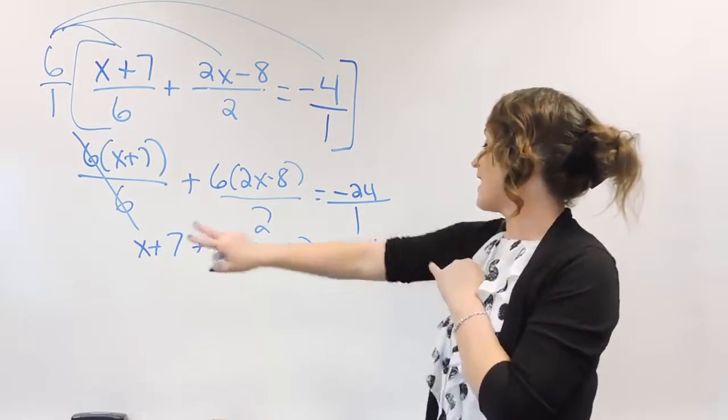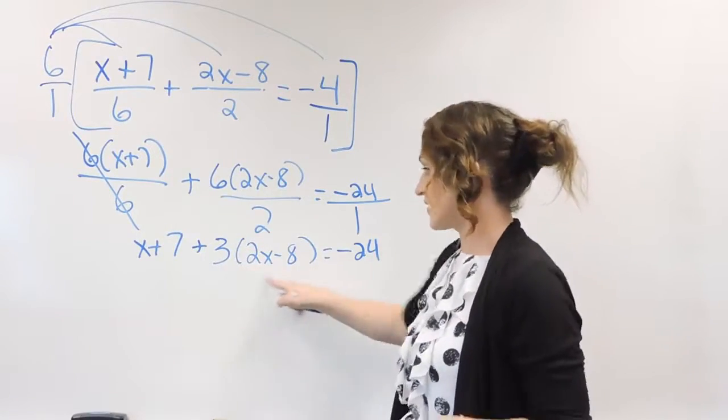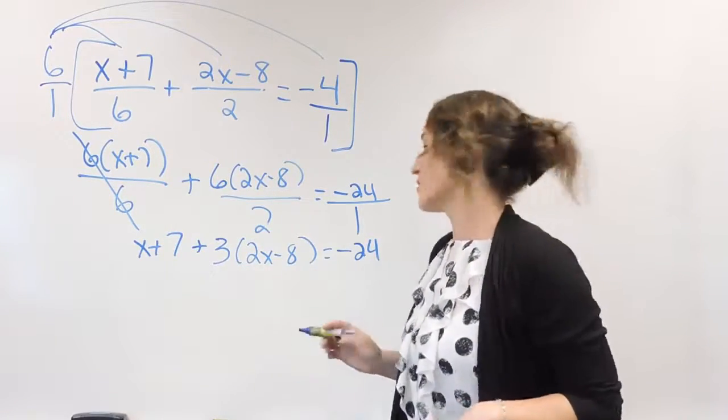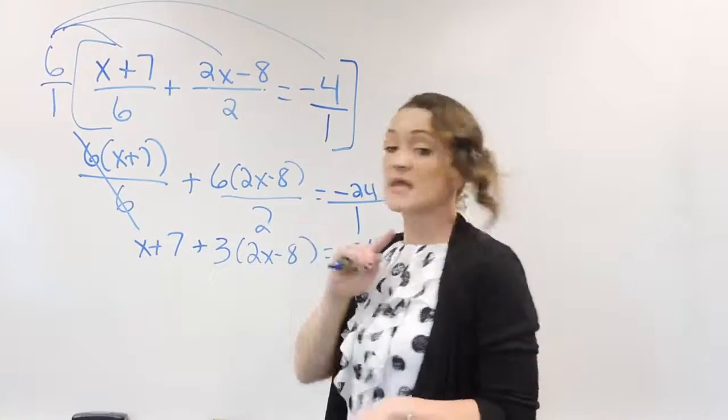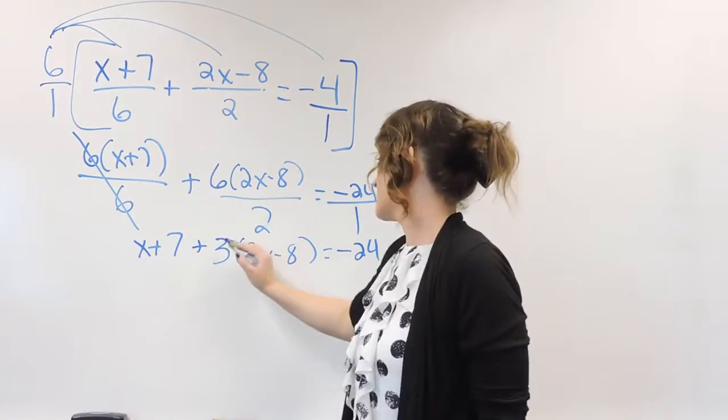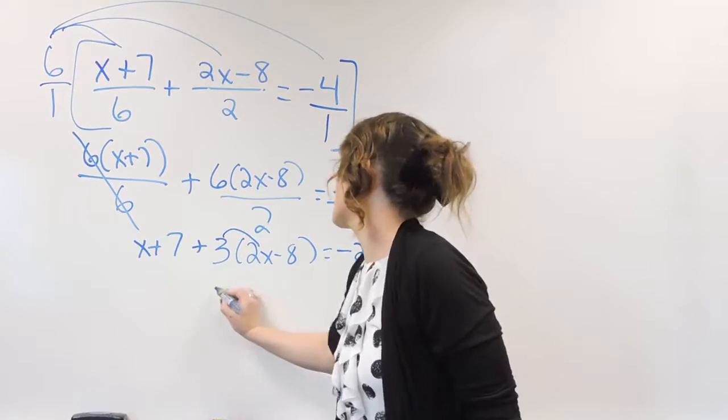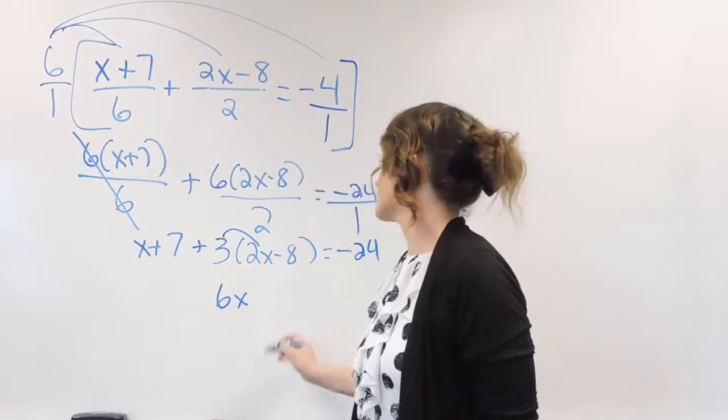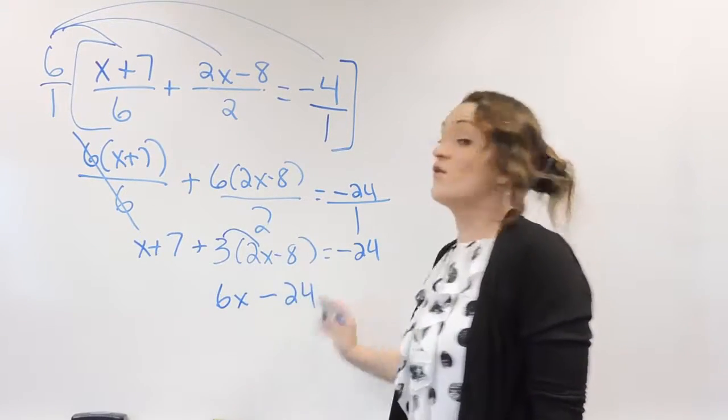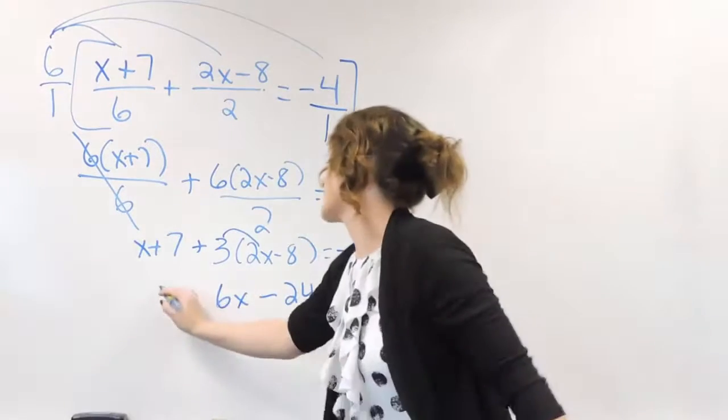Alright, so now that we have this equation, we need to work on distributing over here and combining our like terms. Alright, so first thing we're going to do is distribute. 3 times 2x is going to give us a 6x minus 3 times 8 is 24. Drop everything else down.